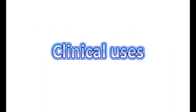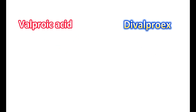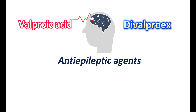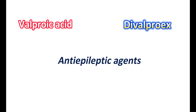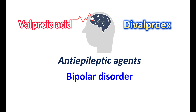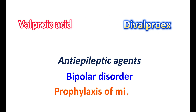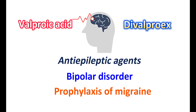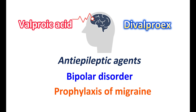Clinical uses: Both valproic acid and divalproex can be used for the same clinical conditions. They are used as anti-epileptic agents, particularly for absent seizures or complex partial seizures. They can also be used for the treatment of bipolar disorder, particularly to treat manic episodes, and even for the prophylaxis of migraine. Even though both have similar clinical indications, divalproex sodium is more preferred in people who require consistent plasma levels.